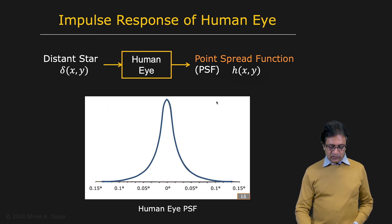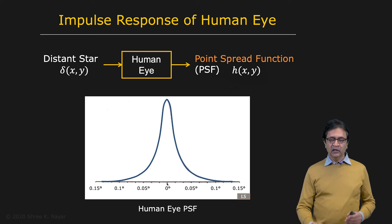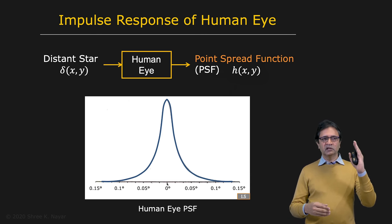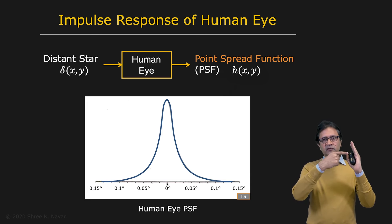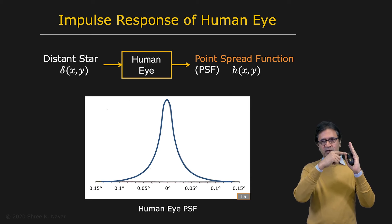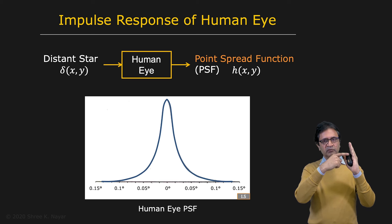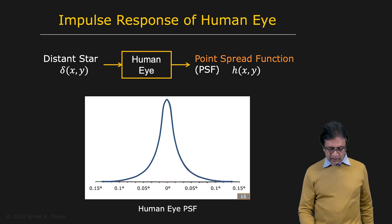In the case of the human eye, this is what it looks like — it's been measured. It's a very, very narrow function. Since the retina is curved, often these functions are described using angles rather than Cartesian coordinates. So you have an angle here being shown — a slice through this two-dimensional point spread function, one slice through it.